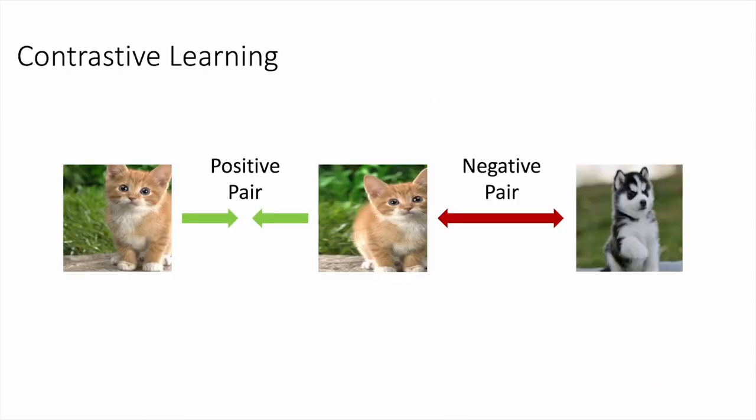In contrastive learning, we typically use two views of the same image as a positive pair and other images as negative samples. The goal is to minimize the feature distance between positives and maximize that between negatives.